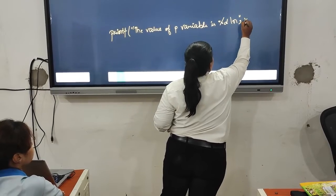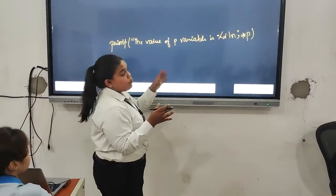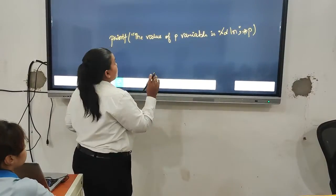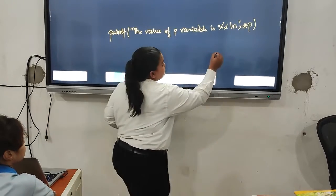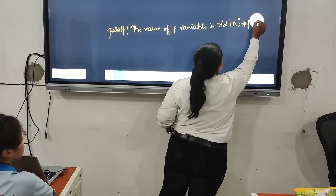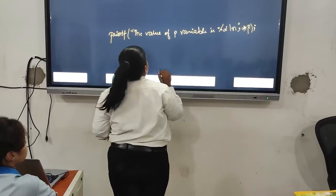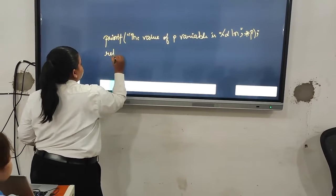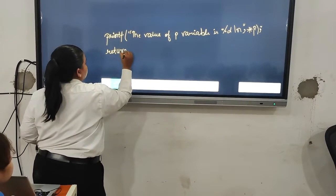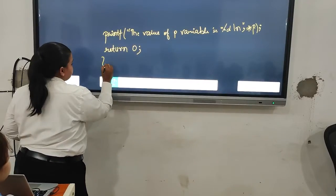Here we will write asterisk p. Why asterisk p? Because we are pointing to the value. Now we will write, here as we have to get the colon. Now we will write return 0. And now we will close the curly braces.